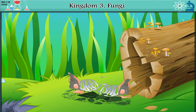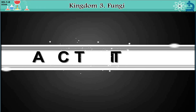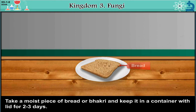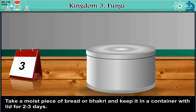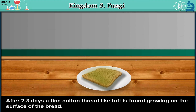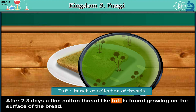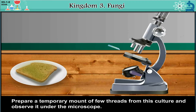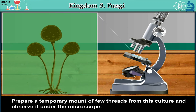Kingdom 3 — Fungi. Activity: Take a moist piece of bread or bhakri and keep it in a container with a lid for 2–3 days. After 2–3 days, a fine cotton thread-like tuft is found growing on the surface of the bread — a tuft means a bunch or collection of threads. Prepare a temporary mount of a few threads from this culture and observe it under the microscope.